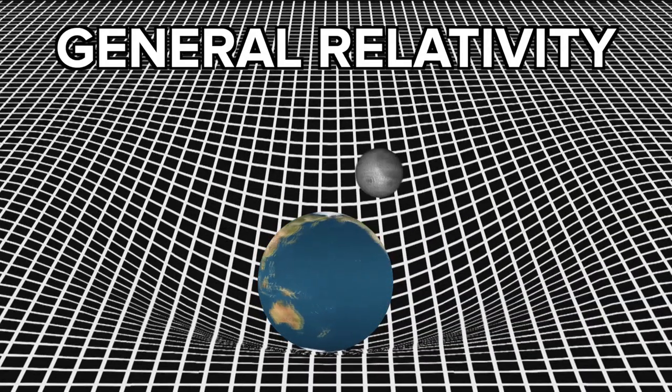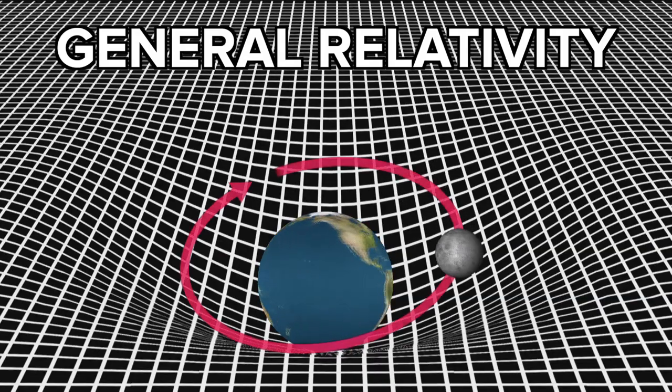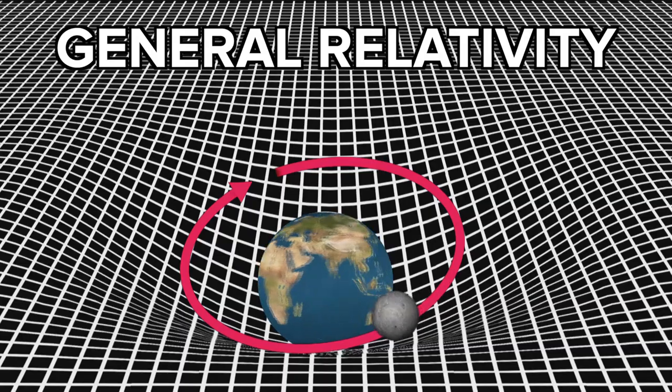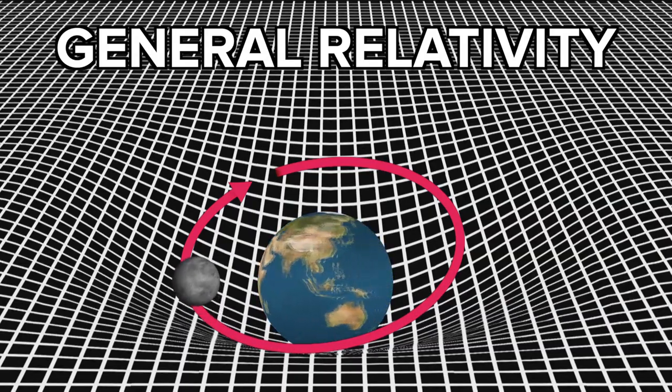In this theory, objects don't orbit other objects because they're attracted together. Instead, objects travel in straight lines in curved space. The orbit of a planet around the sun is a straight line from the point of view of the planet. That's kind of a mind-blowing idea and it definitely needs some explanation.